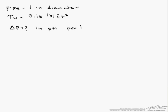If we have a pipe that is 1 inch in diameter and the shear stress on the wall is measured at 0.15 pounds per foot squared, and we want to know what is the pressure drop in psi per 12 foot length of pipe, and we are going to assume laminar flow.